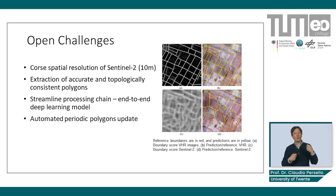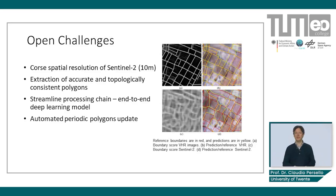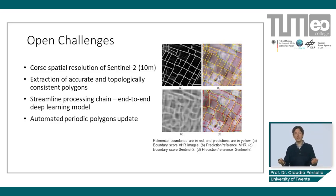The extraction of topologically consistent polygons is a challenging problem overlooked by most studies, which focus on delineating boundaries according to a raster map instead of the polygon format as generally required by geographic information systems. Moreover, the processing chain should be streamlined — for example, by designing end-to-end deep learning models. Finally, more effort should be devoted to designing effective procedures to update field polygons periodically and automatically over the year, which would help significantly reduce cost and time in keeping agricultural information accurate and updated.